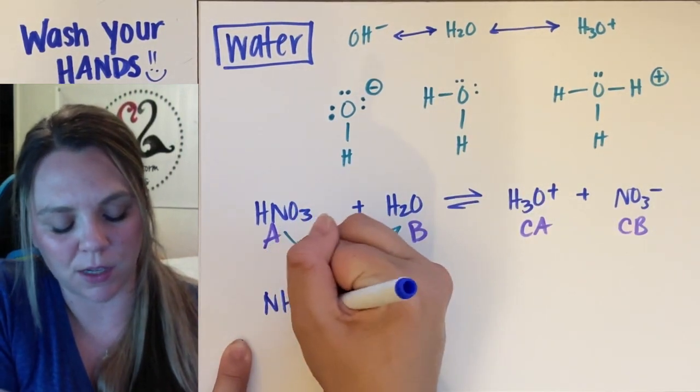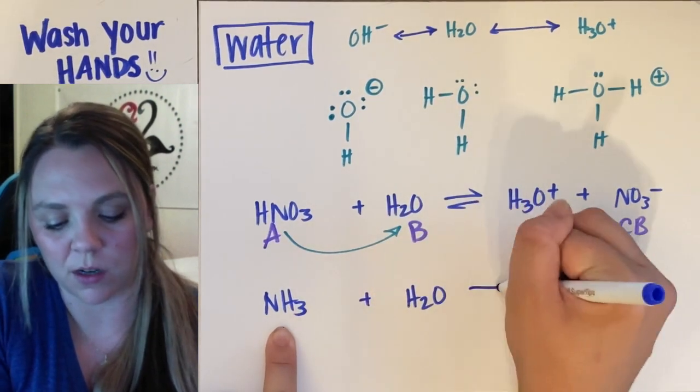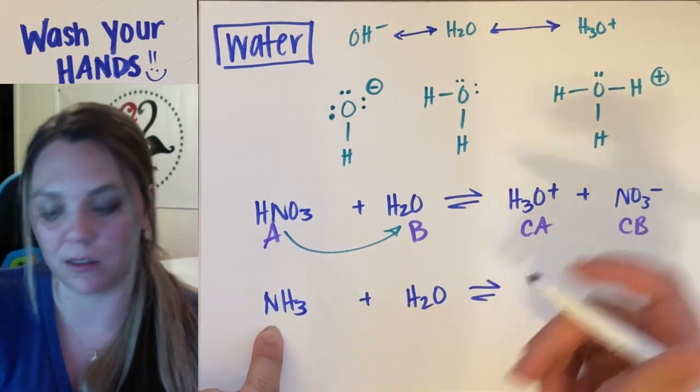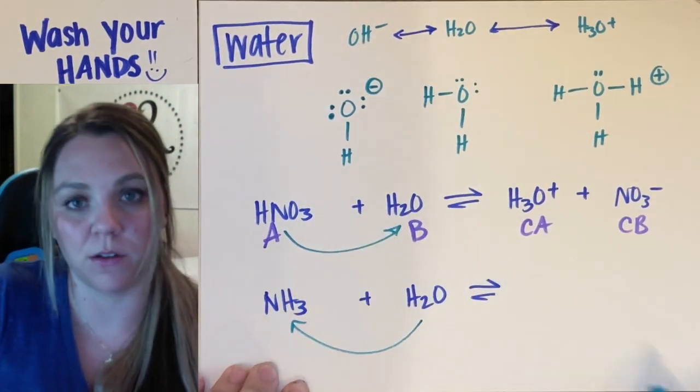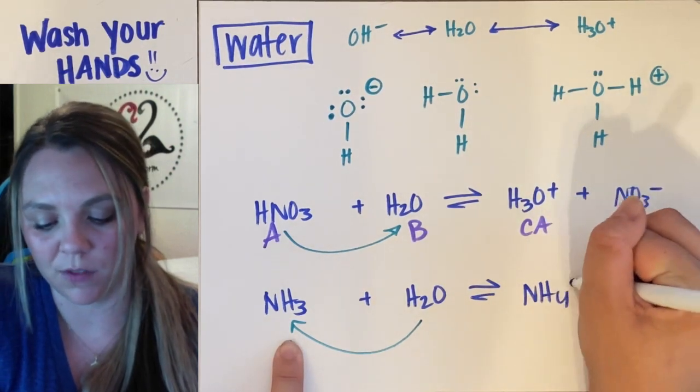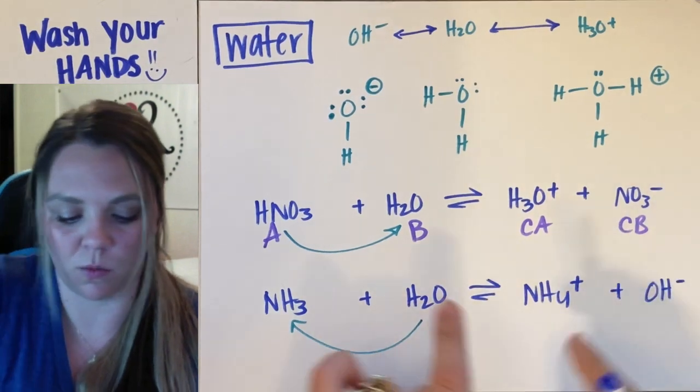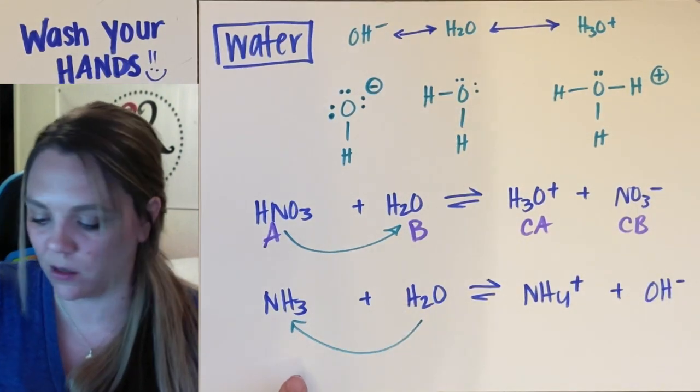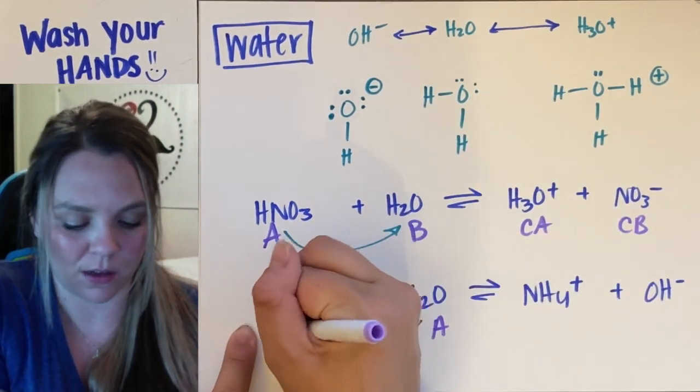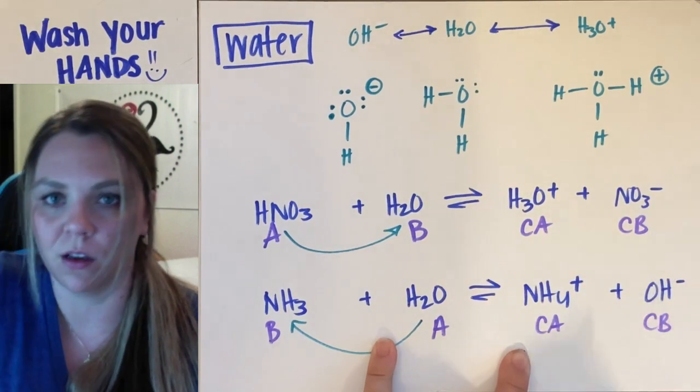If I had NH3, ammonia, plus water. In this case, my water is going to donate the hydrogen to ammonia. So ammonia becomes NH4 plus, ammonium, and water becomes OH minus, becomes hydroxide. So this water in this case would be the acid. Ammonia is the base. Conjugate acid, conjugate base.